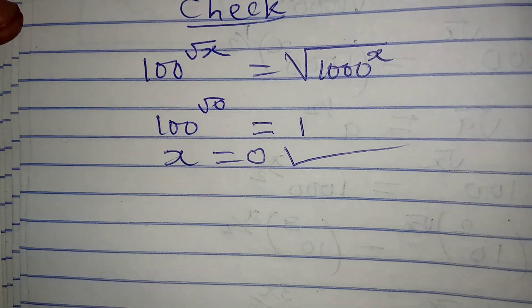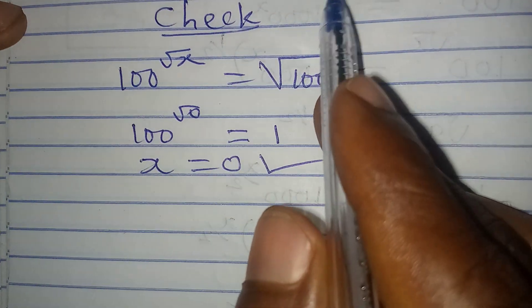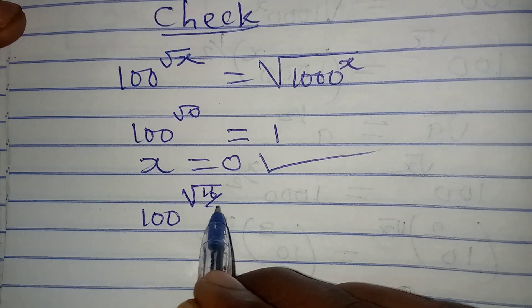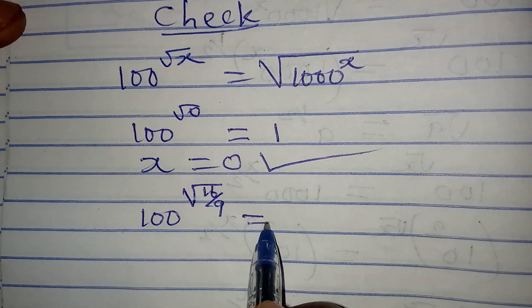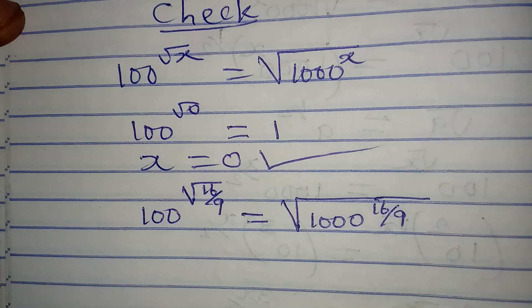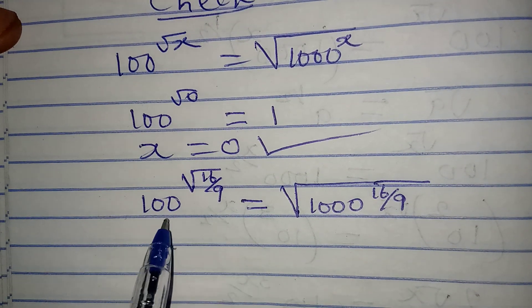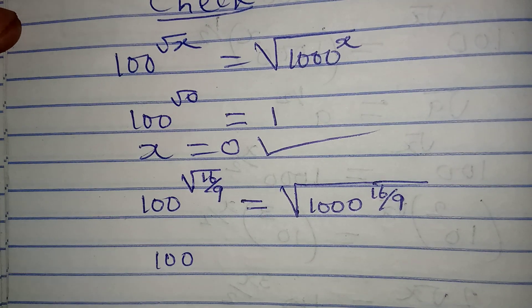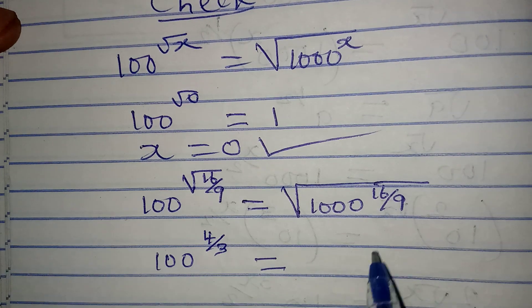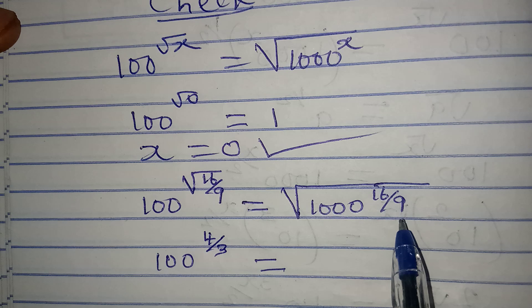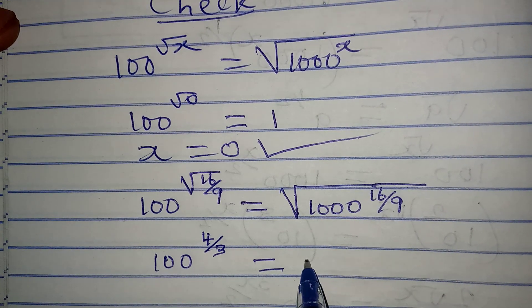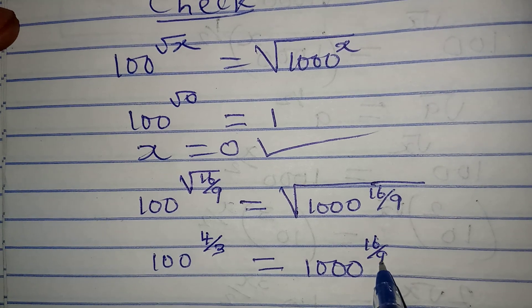Now let's try when X equals 16 over 9. On the left hand side we have 100 to the power of square root of 16 over 9. The square root of 16 over 9 is 4 over 3, so we get 100 to the power of 4 over 3. On the right we have the square root of 1000 to the power of 16 over 9, which is 1000 to the power of 16 over 9 raised to the 1 over 2.